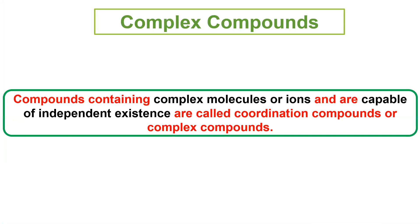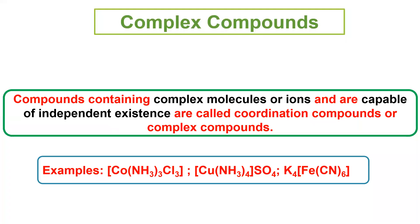Complex compounds: Compounds containing complex molecules or ions and are capable of independent existence are called coordination compounds or complex compounds. Transition metal elements kuchh aise compounds hote hai joh complex molecules hote hai aur ions hote hai, inhye complex compounds kaha jata hai. Examples include cobalt, copper, and iron complexes.